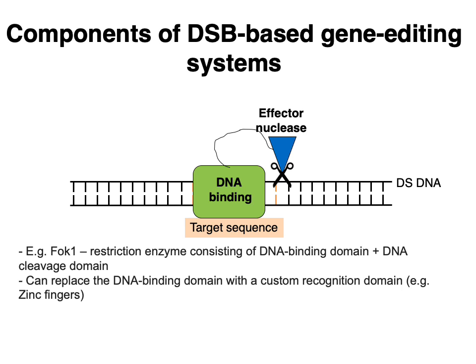One example of an effector nuclease is FokI. FokI is a classic restriction enzyme where the endogenous version contains both a DNA binding domain and a DNA cleavage domain. Typically, the DNA binding domain is replaced with some kind of custom recognition domain, like a set of zinc fingers designed to recognize specific sequences.